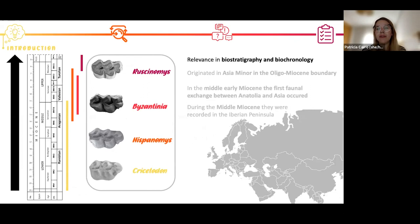These four genera have a relevance in biostratigraphy and biochronology. Most of their species are key species in the mammal Neogene units and allowed us to describe some of these units.